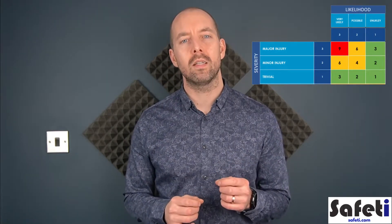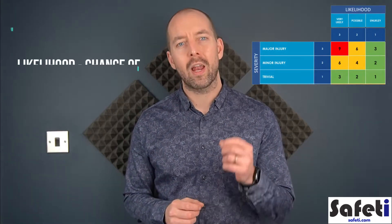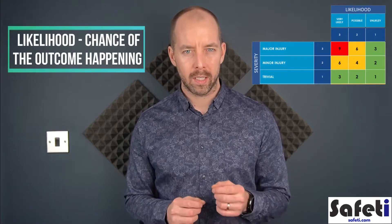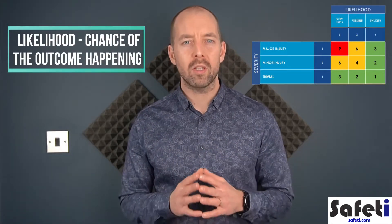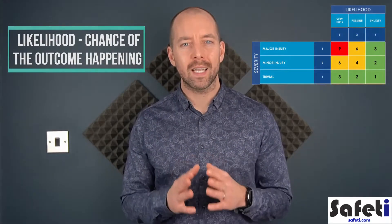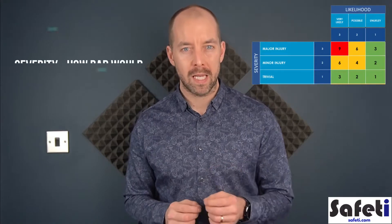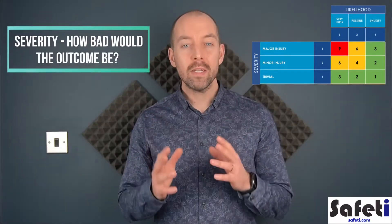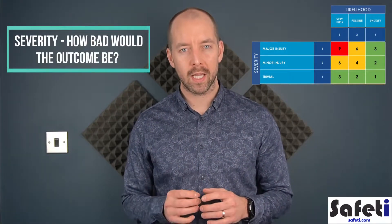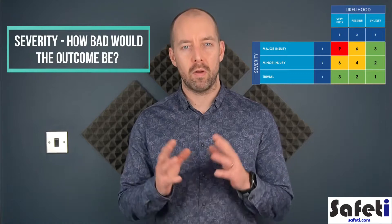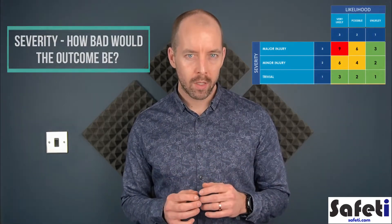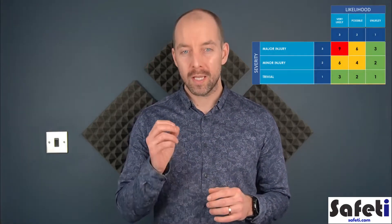When thinking about likelihood, we're asking: what are the chances of that outcome actually happening? When thinking about severity, we're asking: how bad is the outcome likely to be — in other words, how severe would the injury or illness be? The matrix used here is one of the simplest examples you might see.